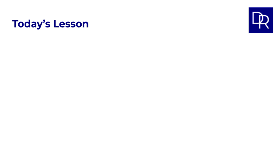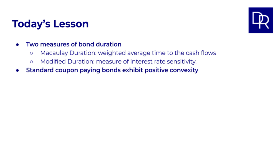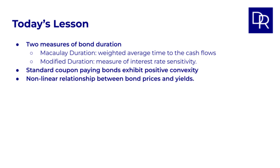That brings us to the end of this lesson on bond duration and convexity. We have covered two measures of bond duration: Macaulay duration as the weighted average time to the cash flows, and modified duration as a measure of interest rate sensitivity. We saw that standard coupon-paying bonds exhibit positive convexity, and highlighted the non-linear relationship between bond prices and yields.